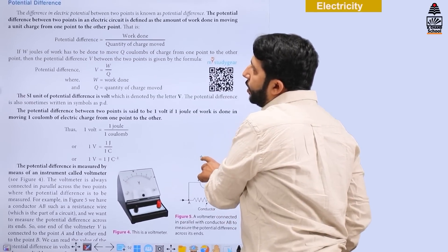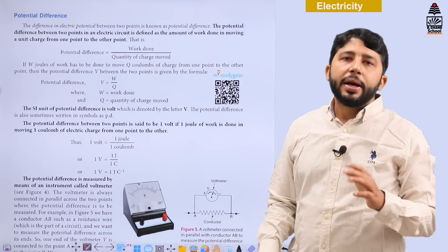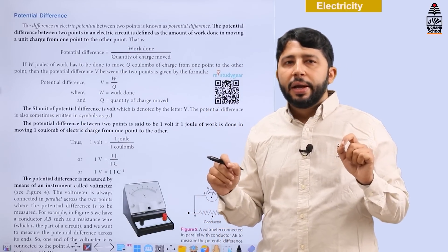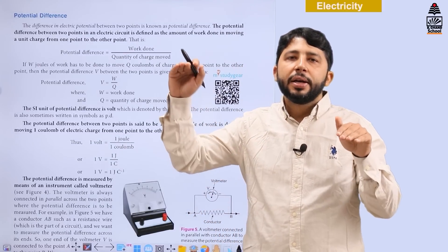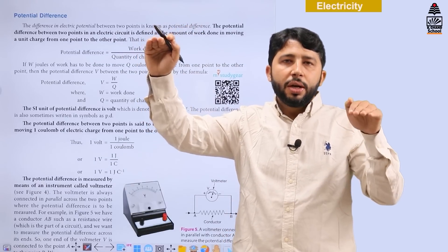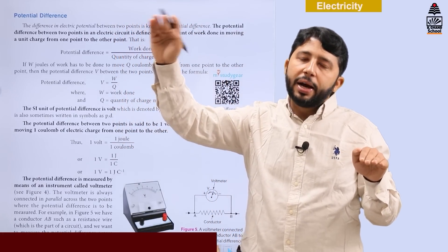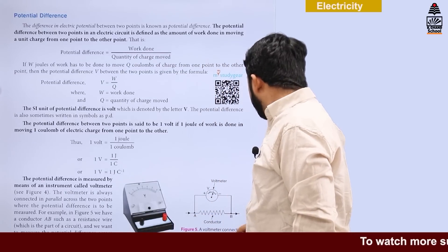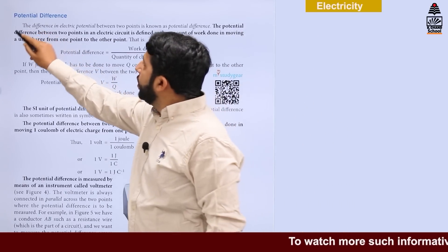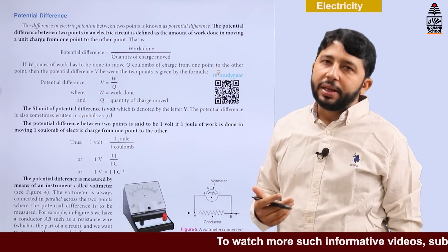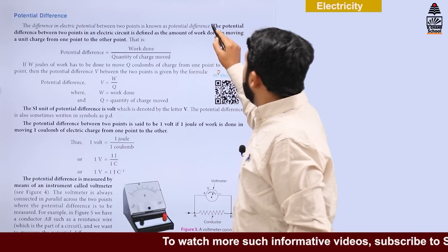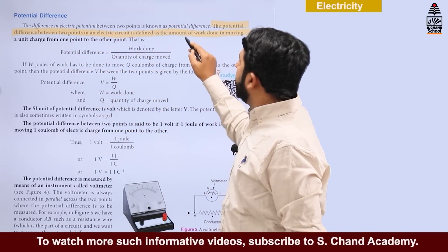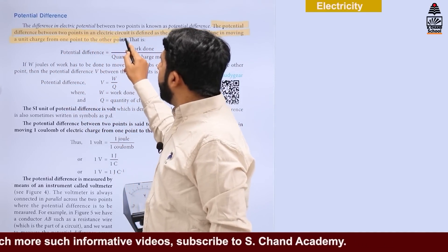If at some place you get a higher potential and at another place you get a lower potential, you have a potential difference between these two points. Just like something at a higher place has higher potential and something at a lower place has lower potential — you can observe the flow from higher to lower. So we need this potential difference for this work done, and in this way we can also flow charges in an electric wire. The potential difference between two points in an electrical circuit is defined as the amount of work done in moving a unit charge from one point to another point.